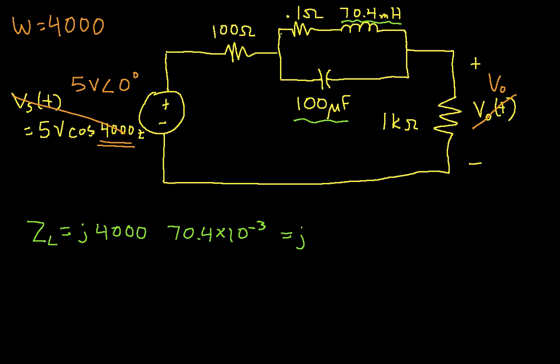And when I work this out, I get this is j 281.6 ohms. And similarly, the impedance of the capacitor will be 1 over j 4000, times 100 times 10 to the minus 6, that's 100 microfarads. And this will be equal to minus j 2.5 ohms.